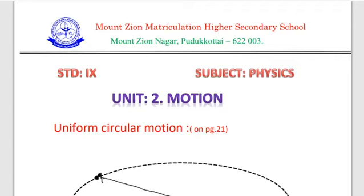Good morning students. Today we have to see unit 2 motion. The learning objectives of today's class are: understand the nature of circular motion, identify centripetal force and centrifugal force in day to day life. Today you will learn about uniform circular motion, centripetal acceleration, and centrifugal force.